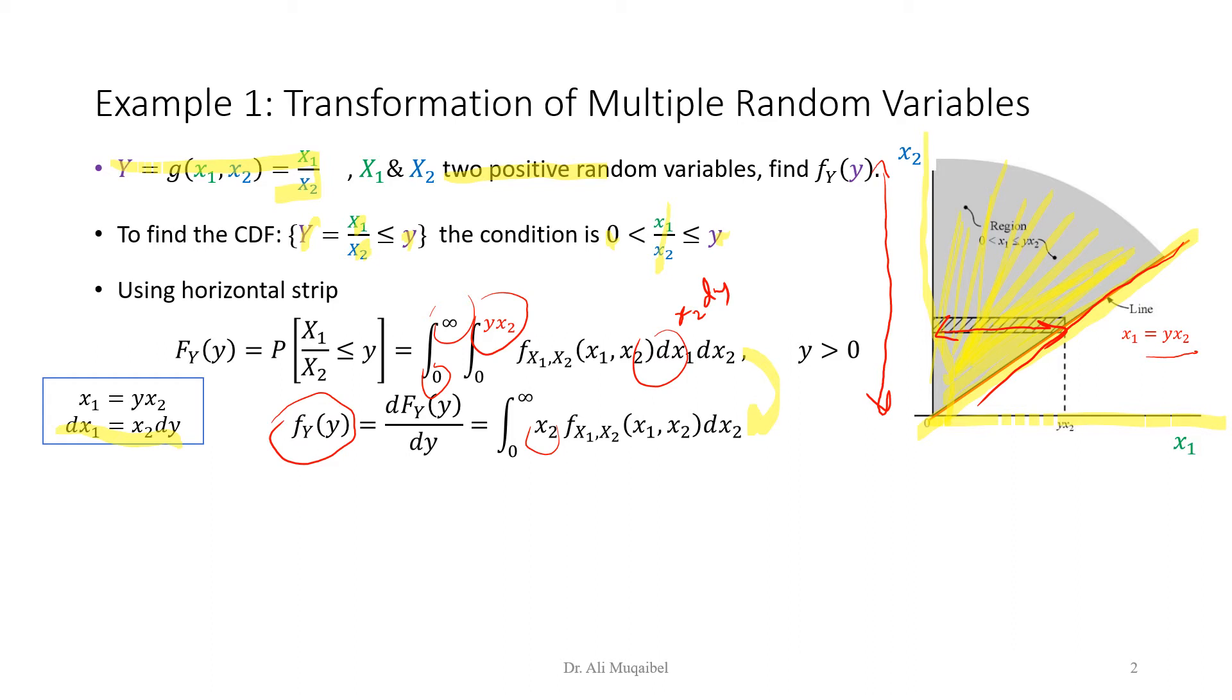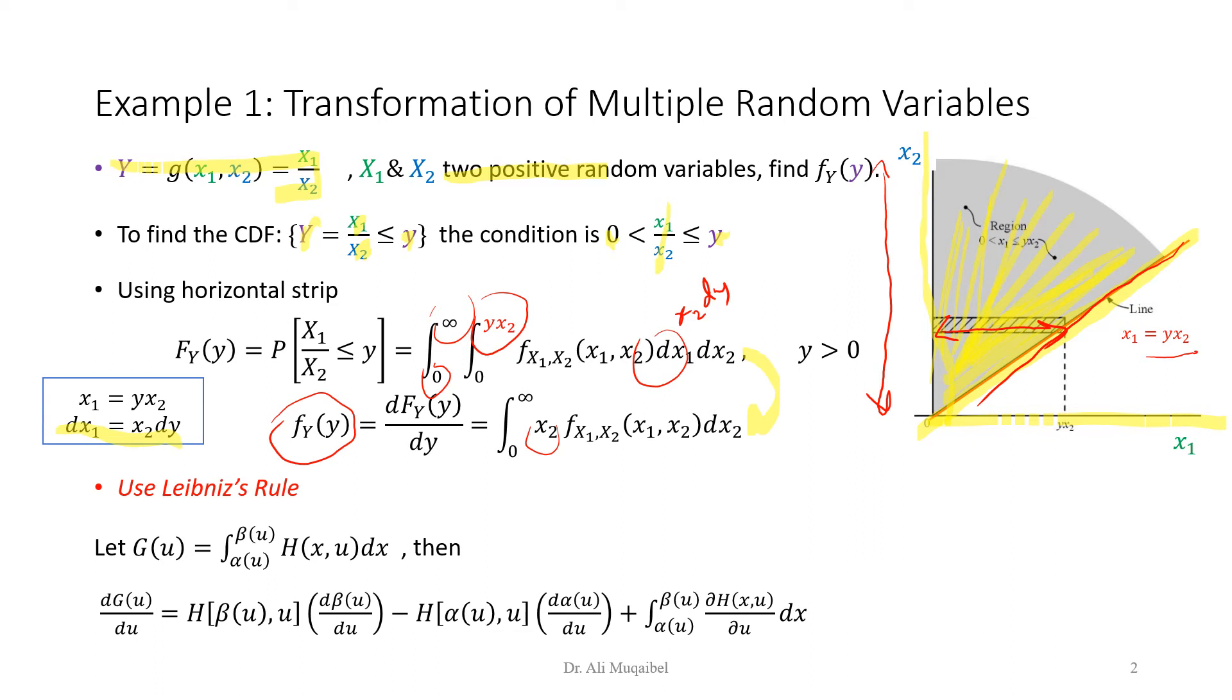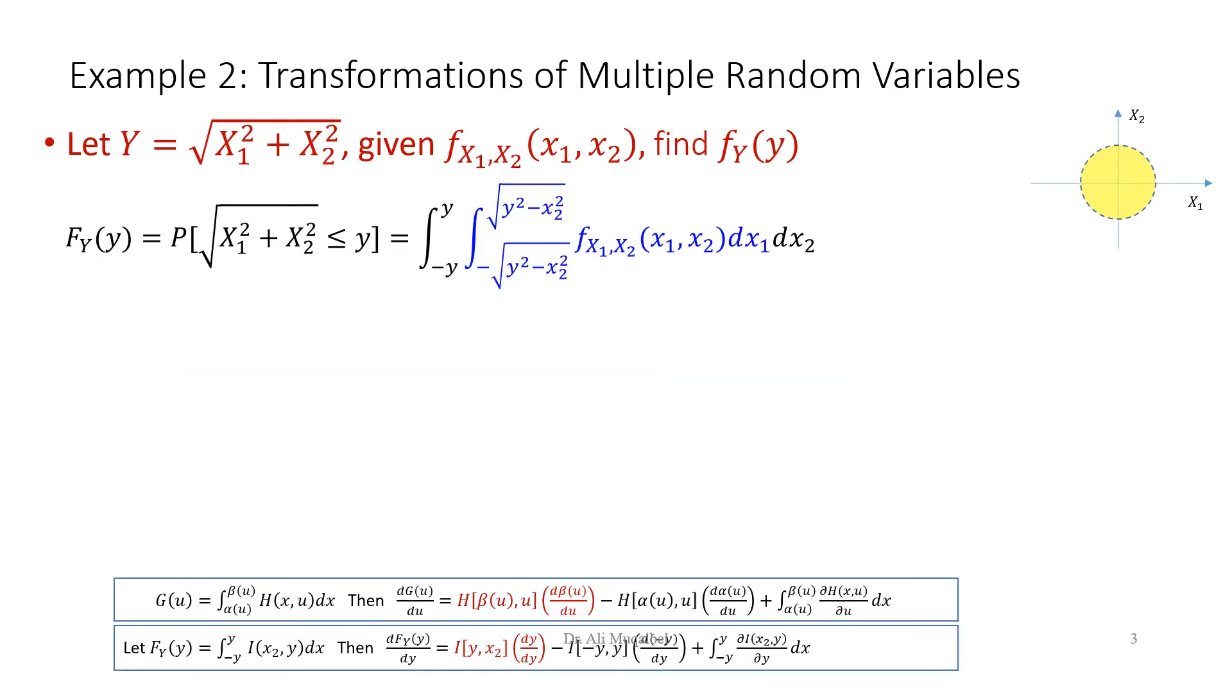Now, if you want to continue with the solution, the problem becomes a mathematical problem, and then we can use Lebanese rule, where it allows you to find the integration, given that the integration limits are also a function of the variables. We're not going to go there, we'll just show you the idea, because some of these problems could prove to be very long. I just want to give you the basic principle. Now, we can also think of another example, x2, where y is related to x1 and x2 by the following relation.